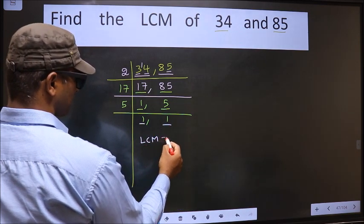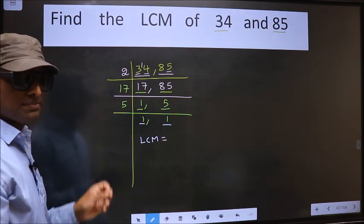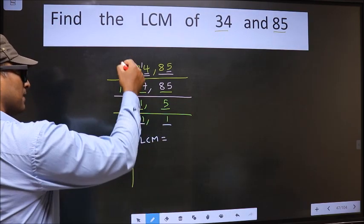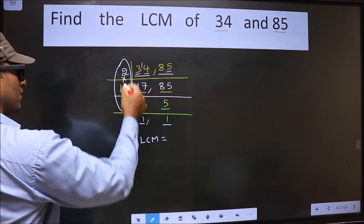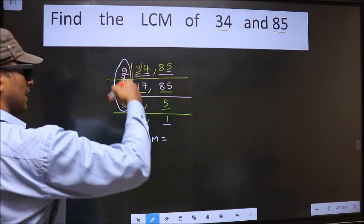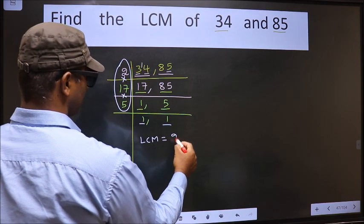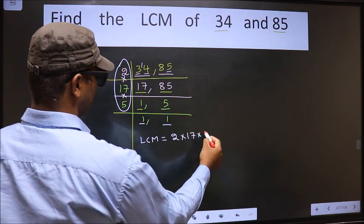So our LCM is the product of these numbers. Product of these numbers, that is 2 into 17 into 5.